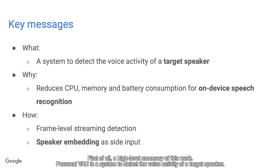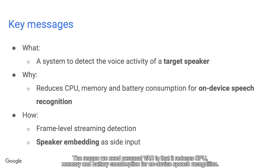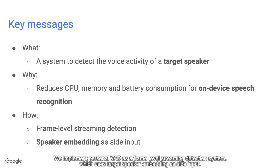First of all, a high-level summary of this work. Personal VAD is a system to detect the voice activity of a target speaker. The reason we need Personal VAD is that it reduces CPU, memory, and battery consumption for on-device speech recognition. We implement Personal VAD as a frame-level streaming detection system which uses target speaker embedding as side input.